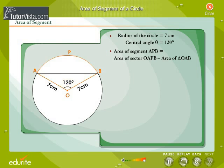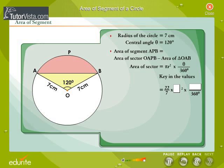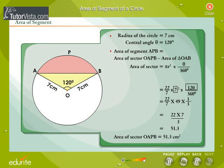To find the area of sector OAPB, remember the formula: Area of sector is equal to pi R squared times theta divided by 360 degrees. Use the value of pi as 22 by 7. Substitute the given values and find the area of the sector. Area of sector OAPB is equal to 51.3 cm².